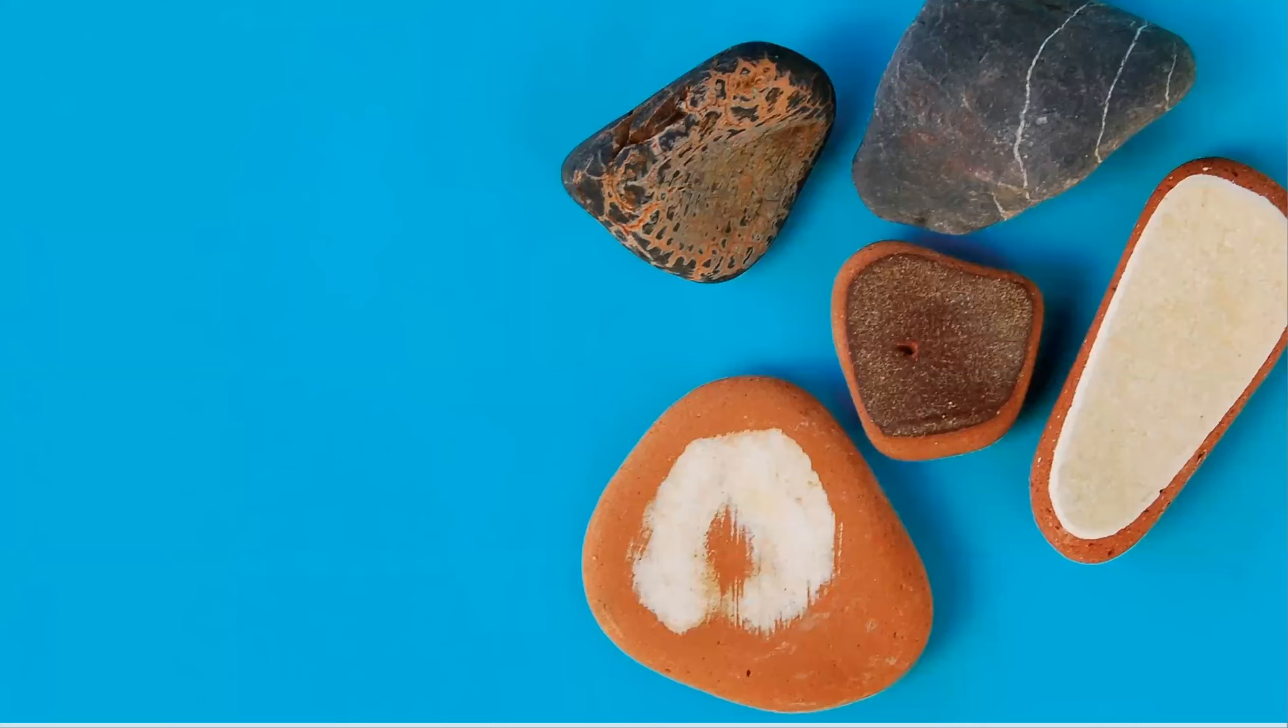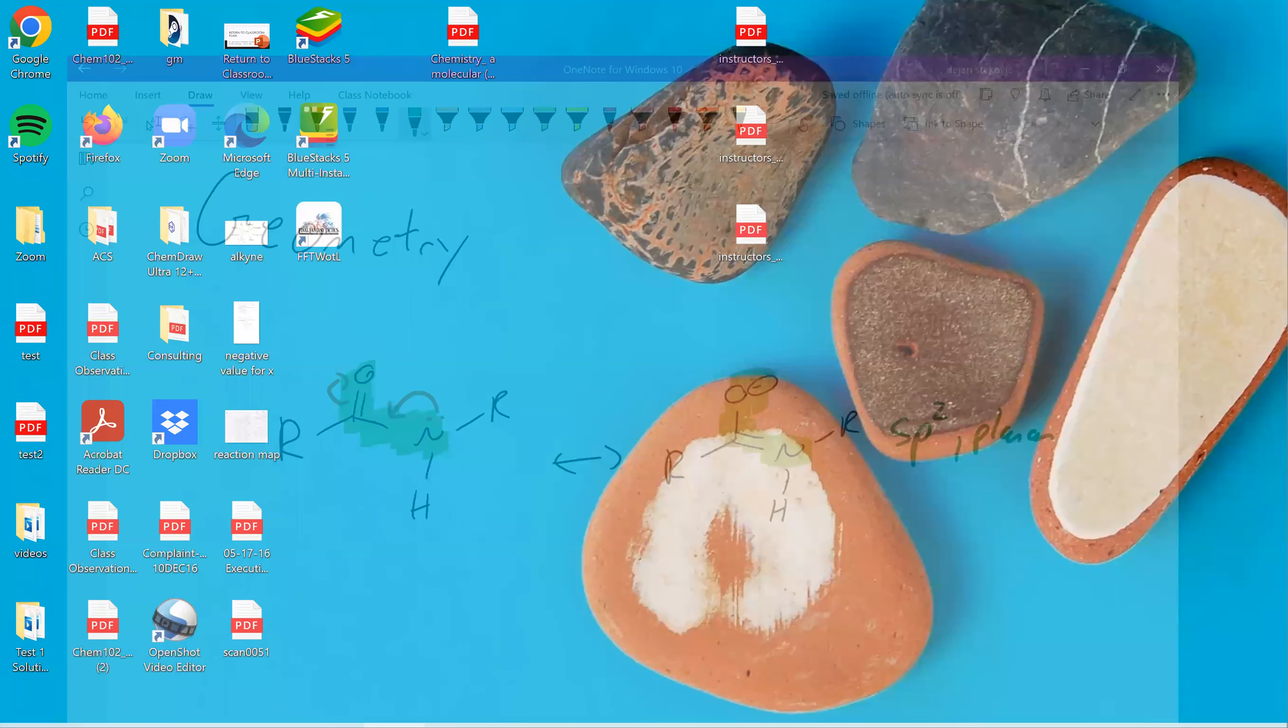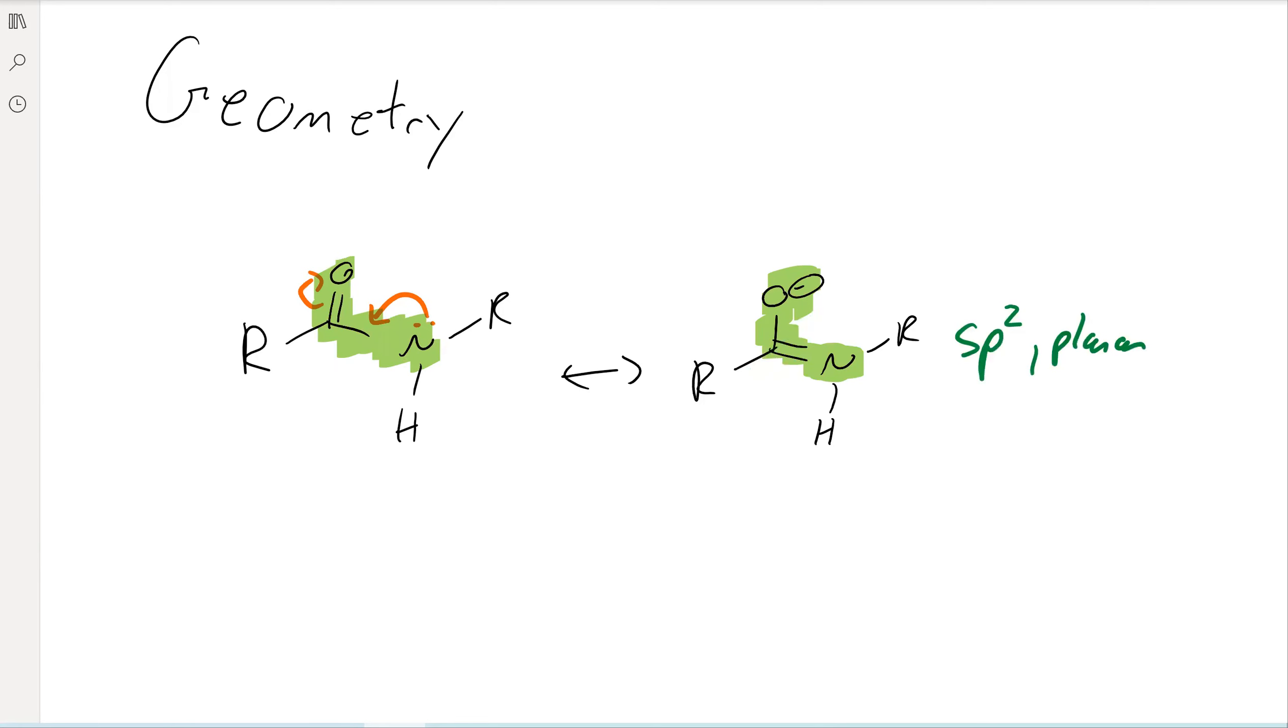And since this is a double bond right here, we've got a double bond right here, it means that there's either no rotation or that there's less rotation. There's a much more significant barrier to rotation than if this was just a regular single bond.